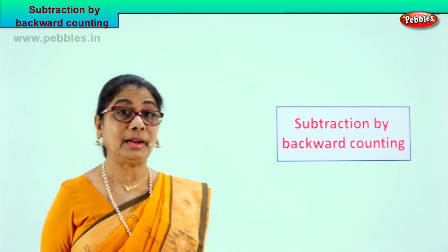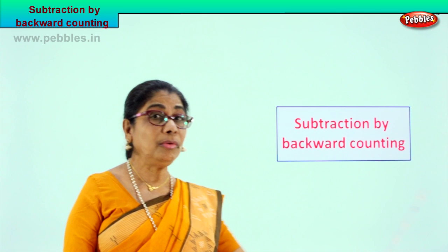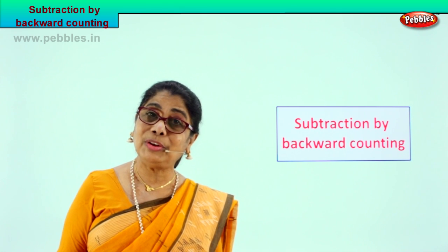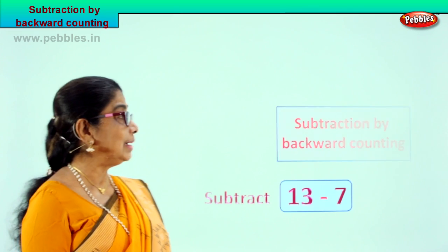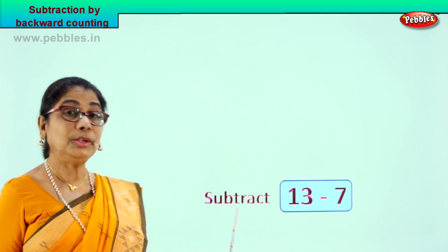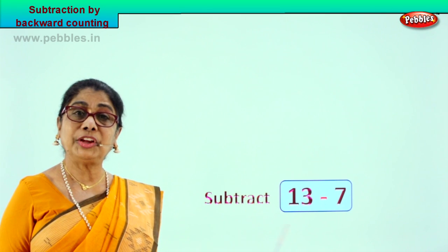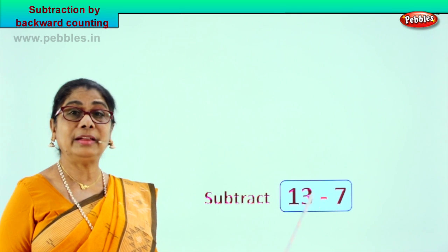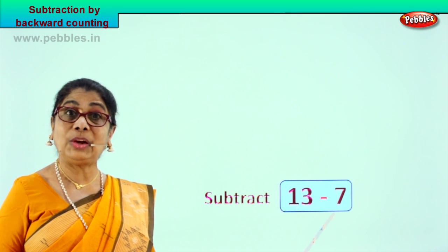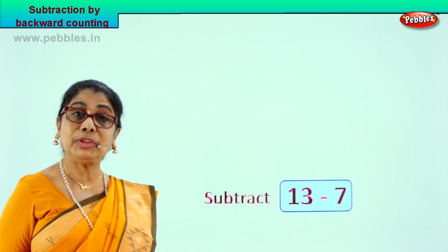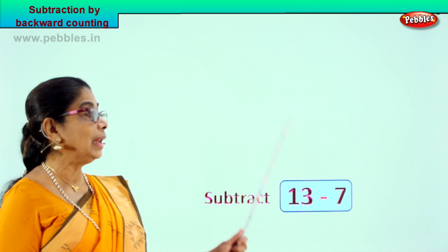We are going to do subtraction. What is the method? Count backward and you get the answer. It's very interesting. Shall we look at our first exercise? The problem given to you is: you are supposed to subtract 13 minus 7 — 13 take away 7 — and you have to count backwards from 13 to get the right answer.